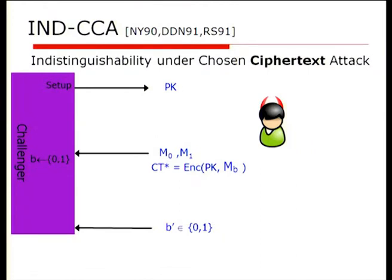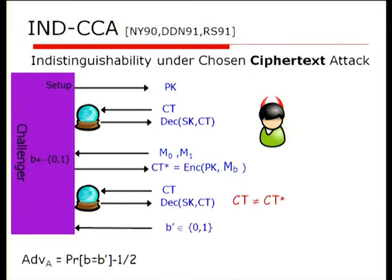For chosen ciphertext security, the pattern is very similar to the indistinguishability game, but we endow the attacker with more power: he gets to send ciphertexts to the challenger, and the challenger decrypts them. This happens both before and after seeing the challenge ciphertext CT star, with one important restriction — after seeing CT star, the attacker cannot ask for decryption of the challenge ciphertext itself, or else the game would be trivial to break. And CCA1 is where we move the second oracle.